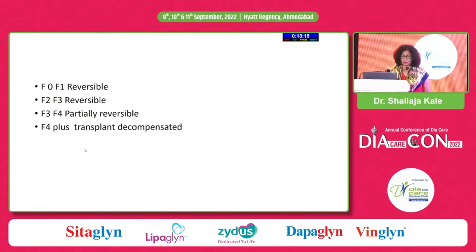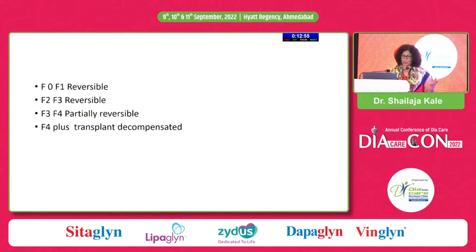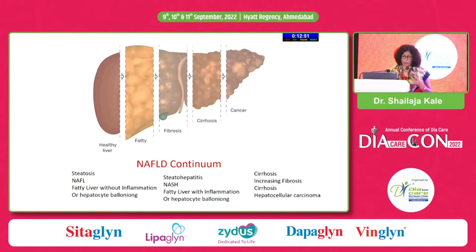Once there is NASH, one should be aware that this person needs aggressive treatment for cardiovascular risk reduction and surveillance for advanced liver disease. Previously it was said that once there is cirrhosis or fibrosis it is not reversible, but now we have studies showing that even fibrosis is reversible. Even partial early cirrhosis is reversible, and many new drugs are also coming — great trials are on the way.